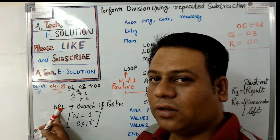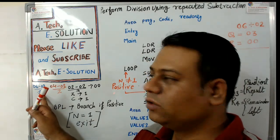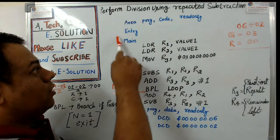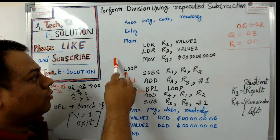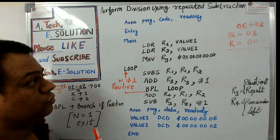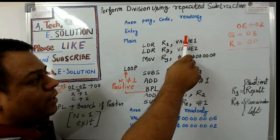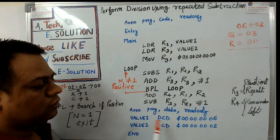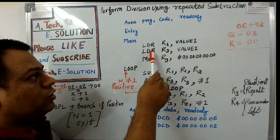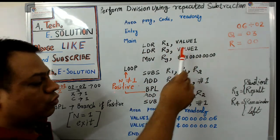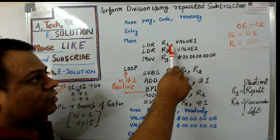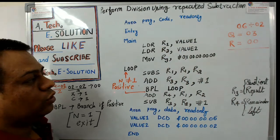Now let us take a look at the complete program. In this area we define the program, and in the main section we define the instructions. LDR is used to load a register from a value. Value 1 is a variable defined here with value 06, so 06 is loaded into register R1. We load register R2 with value 2, which is 02, so 02 is loaded into R2. So R1 equals 06 and R2 equals 02.